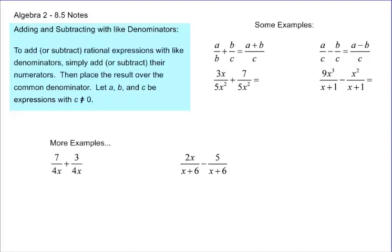What we're going to do in this section is add and subtract like denominators. When you're going to add or subtract rational expressions with like denominators, all you need to do is add their numerators. In other words, the denominators on the bottom, numerators on the top, then place the result over the common denominators. So in this slide and on the next, we're going to let A, B, and C be numbers or expressions, and C cannot be 0, and B cannot be 0.